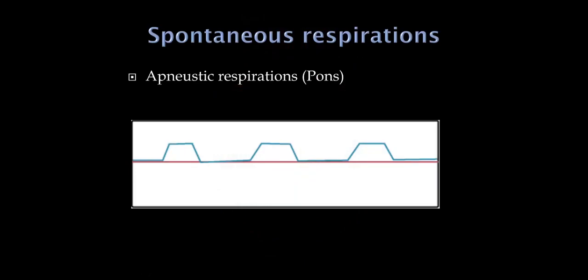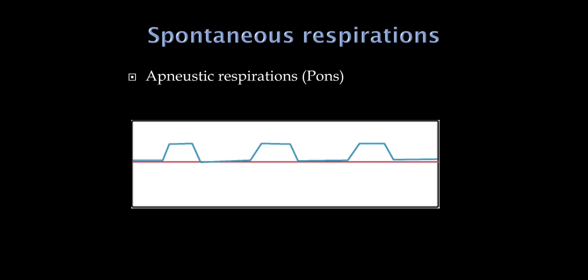The most helpful breathing pattern to remember, because it has the most specificity, is apneustic respirations — this suggests the lesion is in the pons. The patient will take in a deep breath and hold it, then exhale, and there's a long period of apnea, then another deep breath held. If you see that breathing pattern, it would be seen in someone with a pontine hemorrhage who is in a coma.